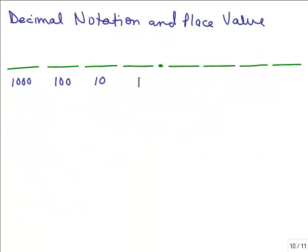We're going to be working with decimals now, starting with decimal notation and place value. You already know about whole number place value — we had the 1, the 10, the 100, the thousandth place, et cetera. Notice that to get the next number to the left, you would just multiply by 10.